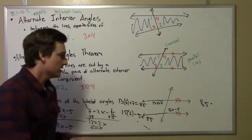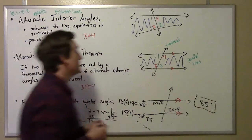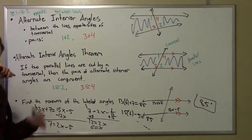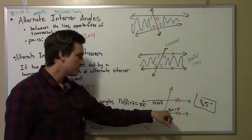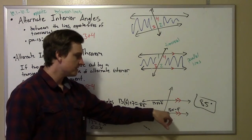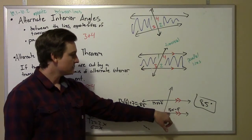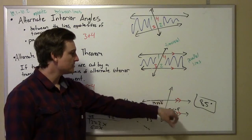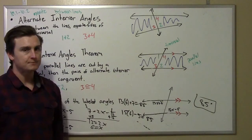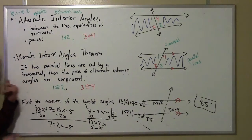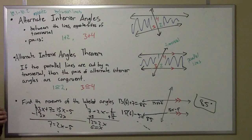Remember, alternate interior angles. Alternate means opposite sides of the transversal - it's across from it and on the other line. Interior means they're between the two lines. If the lines are parallel, you're going to have congruent angles.